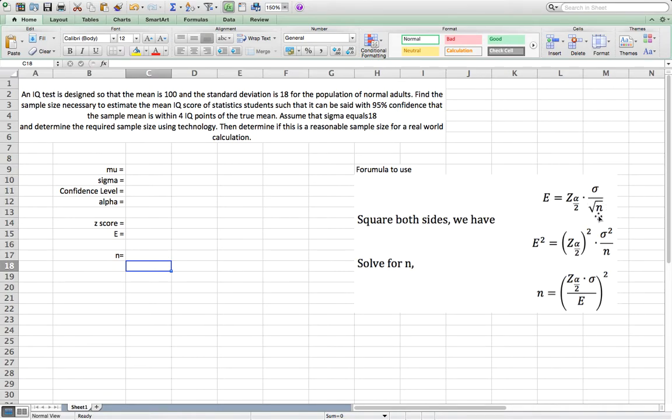So we want to find n, so we solve this equation for n. We square both sides to get rid of the square root, then multiply n on both sides, then divide e square on both sides. We get n equals z alpha over 2 multiplied by sigma divided by e, then squared.